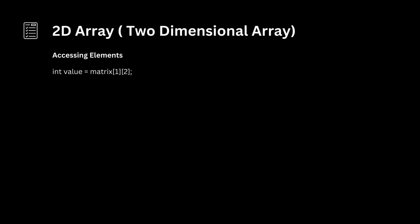Accessing elements: int value = matrix[1][2]. Matrix is the name of the two-dimensional array declared earlier. Index 1 accesses the second row of the matrix — remember, array indices in C and C++ are zero-based, so 1 corresponds to the second row. Index 2 accesses the third column of the second row; again, indices are zero-based, so 2 corresponds to the third column. This declares a variable named value of type int to store the retrieved value. So this line accesses the element in the second row and third column of the matrix array, which is 7, and assigns it to value.